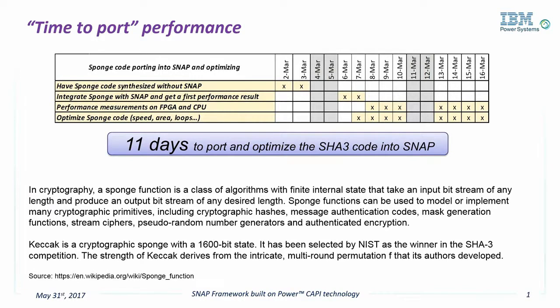The customer had C code of a sponge, or Keccak algorithm, which is a specialized version of SHA3 encryption. After receiving the request, our team ported the C code to CAPI Snap in just three days. After a mere 11 days, we had a fully optimized version running. We took the results back to a very impressed customer. In just two days, we were able to compile it without any big modification.